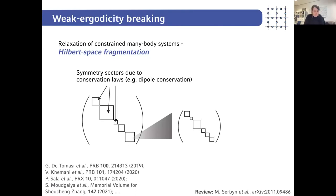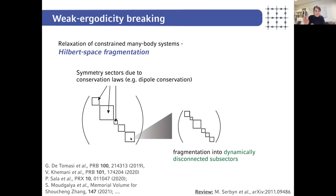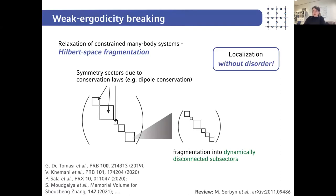Another example is the phenomenon of Hilbert space fragmentation, as we have heard, where in special systems — for instance those that conserve the dipole moment — there's an additional substructure that emerges in the Hilbert space. Symmetry sectors fragment further into dynamically disconnected sub-sectors, and this leads to a failure of thermalization because a prepared initial state can only explore the states within one fragment, giving rise to localization even without disorder.